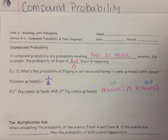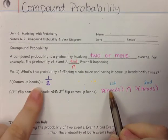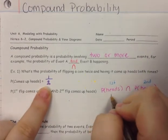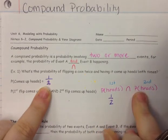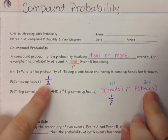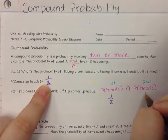Now we can write out the probabilities of them happening. The probability of heads we already had — it was one out of two. On the second event, the probability of heads again was only one out of two.